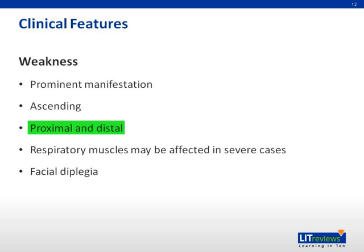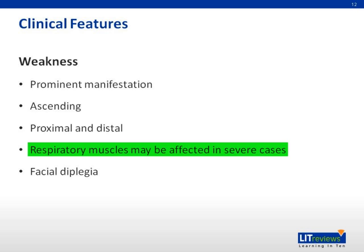Both proximal and distal limb muscles can be involved. Intercostal, neck, and cranial muscles may be affected later. Total paralysis with respiratory failure occurs in about 5% of cases. Facial diplegia occurs in more than half of the cases.